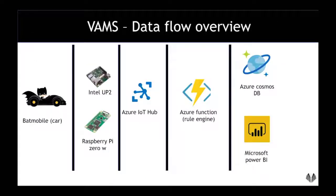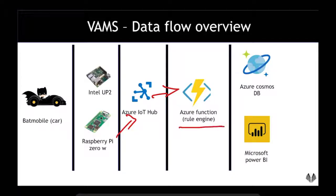For VAMS, we use the OBD2 port of a vehicle. From there, we use a Raspberry Pi Zero W or an Intel UP Square to get the data, and finally push it into the Azure IoT Hub over the internet. From the Azure IoT Hub, an Azure Function is triggered where we create the rule engine. This Azure Function saves the data to CosmosDB as well as invoking Power BI for live visualization.